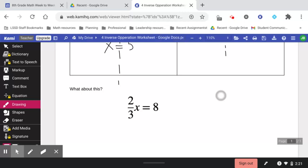Well, this is a multiplication problem, 2 thirds times x. The opposite of multiplication is division. I have to divide both sides by 2 thirds.